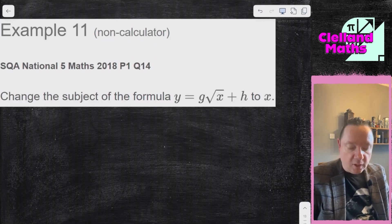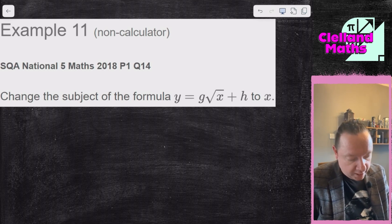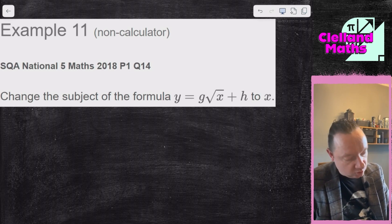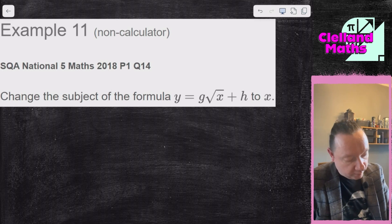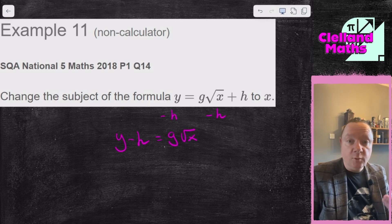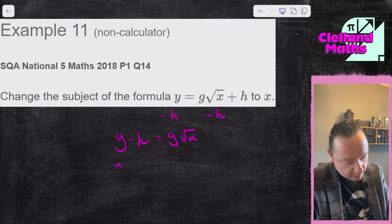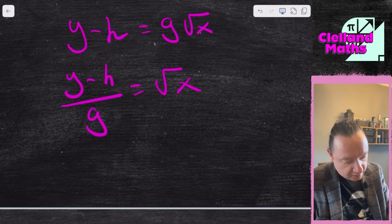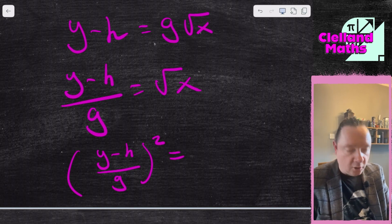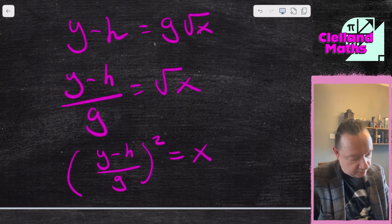Example 11 — SQA National 5 Maths 2018, Paper 1, Question 14. Change the subject of the formula y = g√(x + h) to x. The x is stuck under a root but I've got a plus h to deal with first. Take away h: y minus h equals g root x. Then divide by g: (y minus h) over g equals root x. Finally square both sides: ((y minus h) over g) all squared equals x. And we're done.